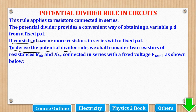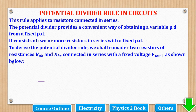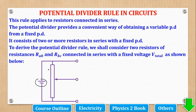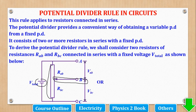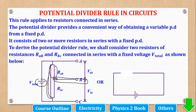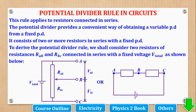To derive the potential divider rule, we shall consider two resistors of resistances RAB and RBC connected in series with a fixed voltage V total. There are two ways of drawing it. One is by using a slider — this slider divides the total resistance into two resistors, meaning this one will have a PD VAB and this one a PD VBC. That is one way of drawing it.